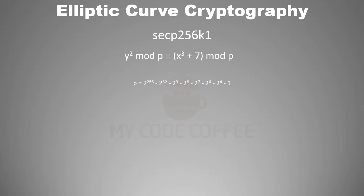You should know the meaning of modulo p here. y squared modulo p means the remainder value when you divide y squared by p. For example, 163 modulo 10 equals to 3 because 3 is the remainder when you divide 163 by 10. So this equation is saying that if (x, y) is a point on the Bitcoin elliptical curve, then dividing y squared by p gives the same remainder as dividing x cubed plus 7 by p.